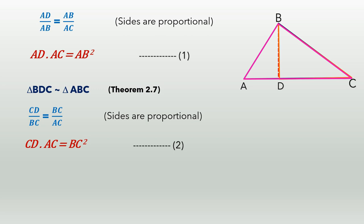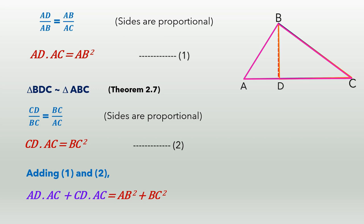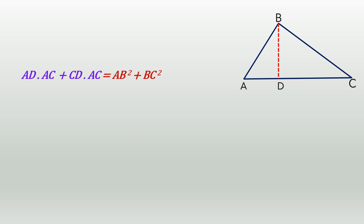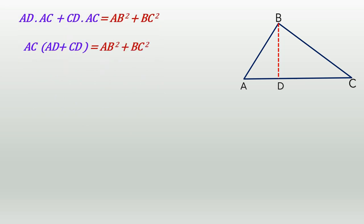Add equation number 1 and equation number 2, children. AD × AC + CD × AC = AB² + BC². Taking AC as common: AC × (AD + CD) = AB² + BC². AD + CD is nothing but AC. Therefore, AC × AC = AB² + BC², that is, AC² = AB² + BC². This is the logical proof, children.